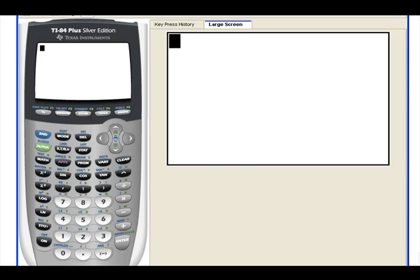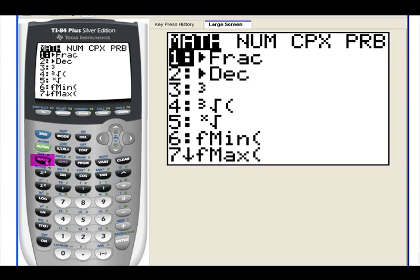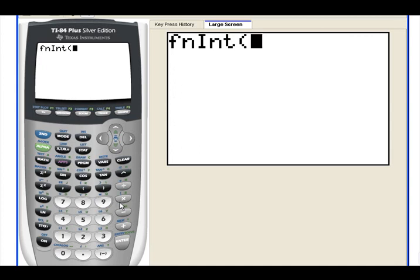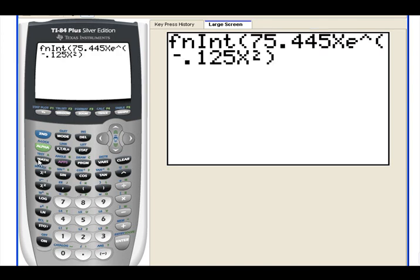Open the calculator. We're at the home screen. You can see the blinking cursor in the upper left-hand corner. From the Math menu, choose number 9. You can use the down arrow to get there or just hit the number 9. And then enter the function. There you go.